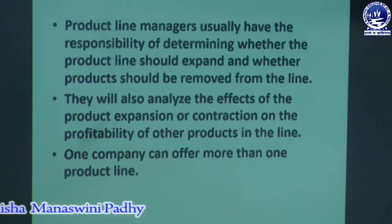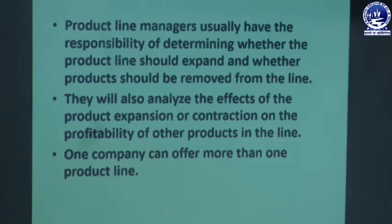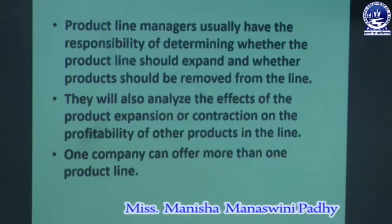One company can offer more than one product line. For example, Tata offers different categories of services and products — Tata provides salt, steel materials, car facilities, etc. These are unrelated products, which proves that one company can offer more than one product line.